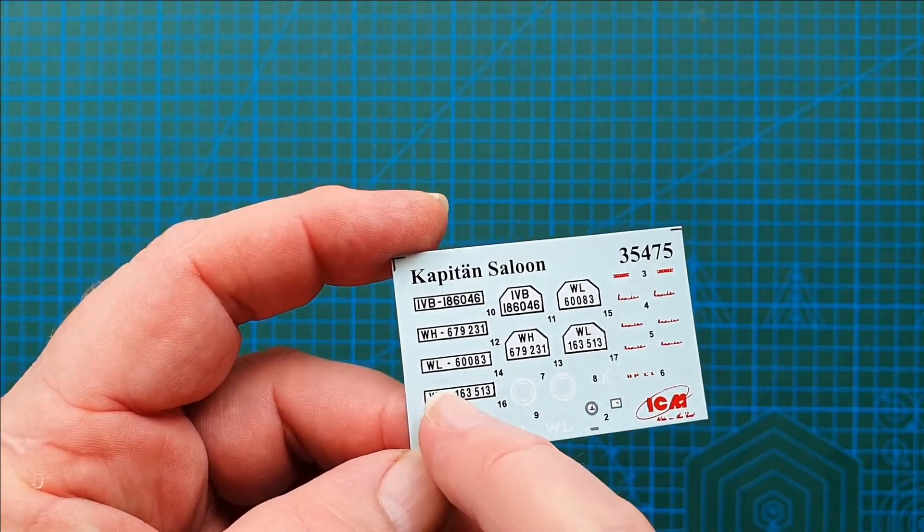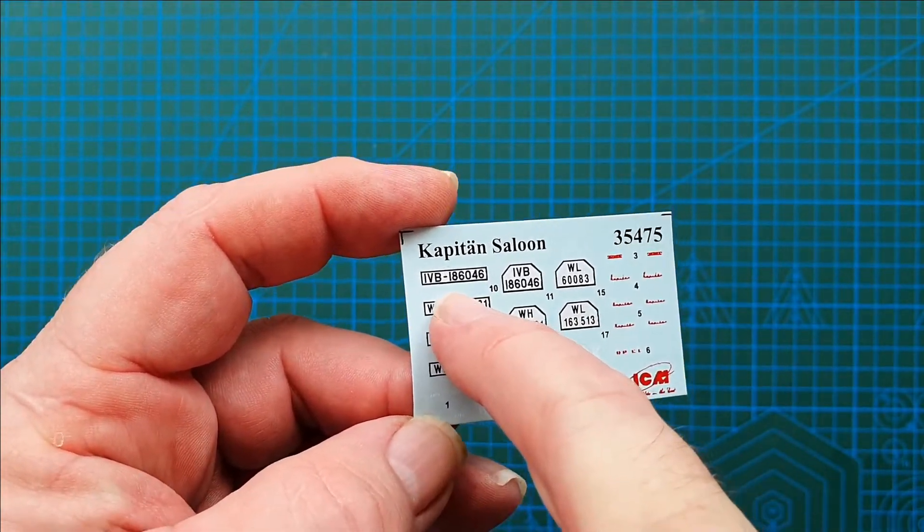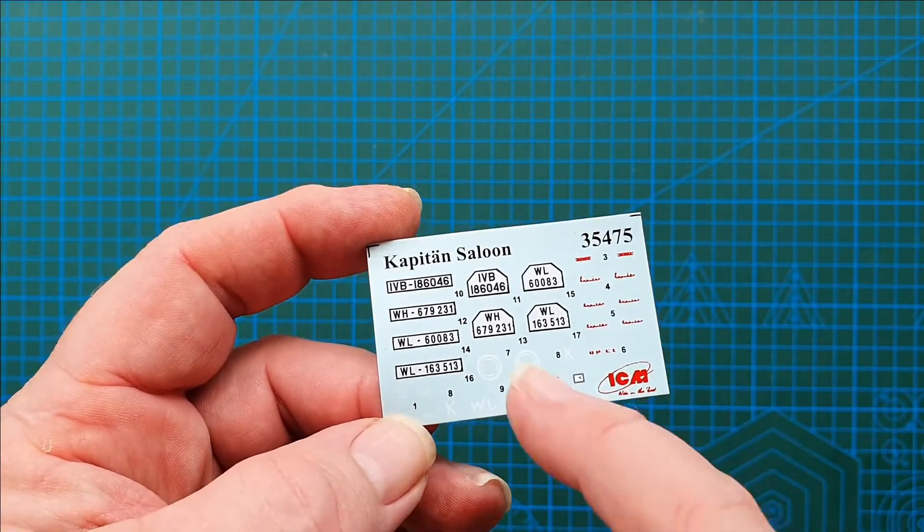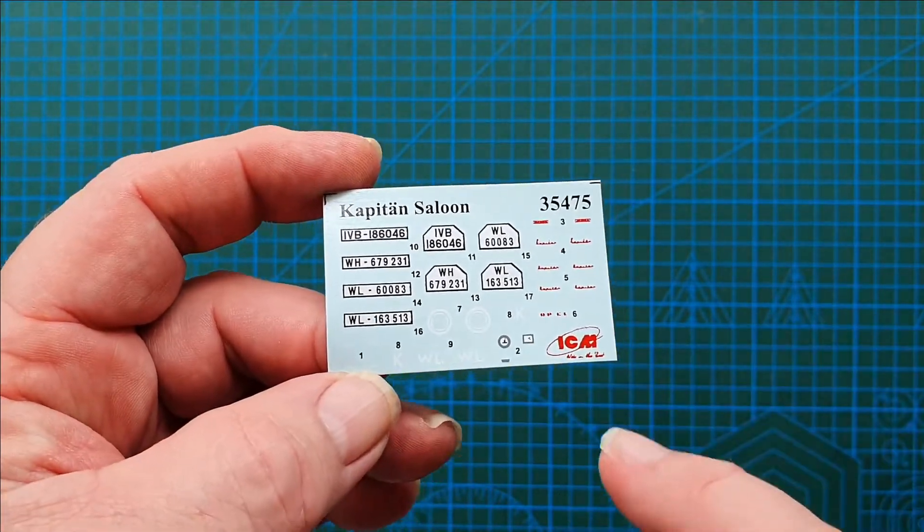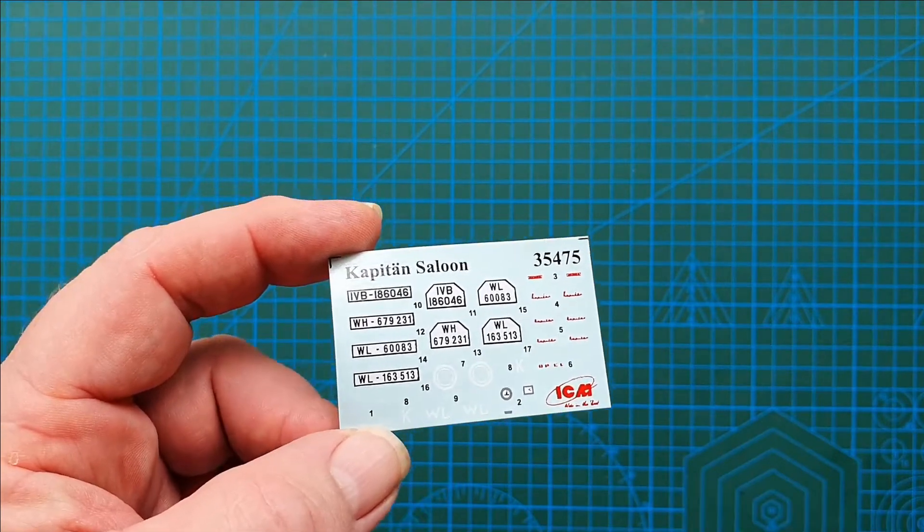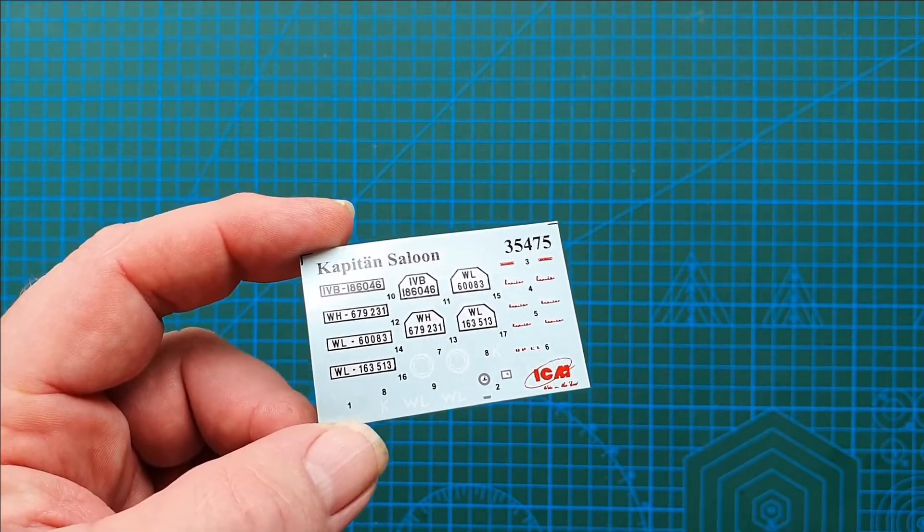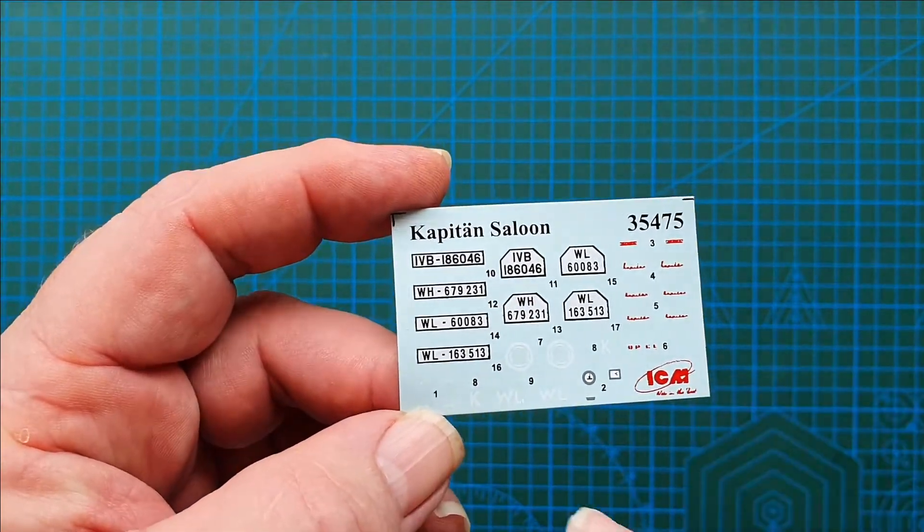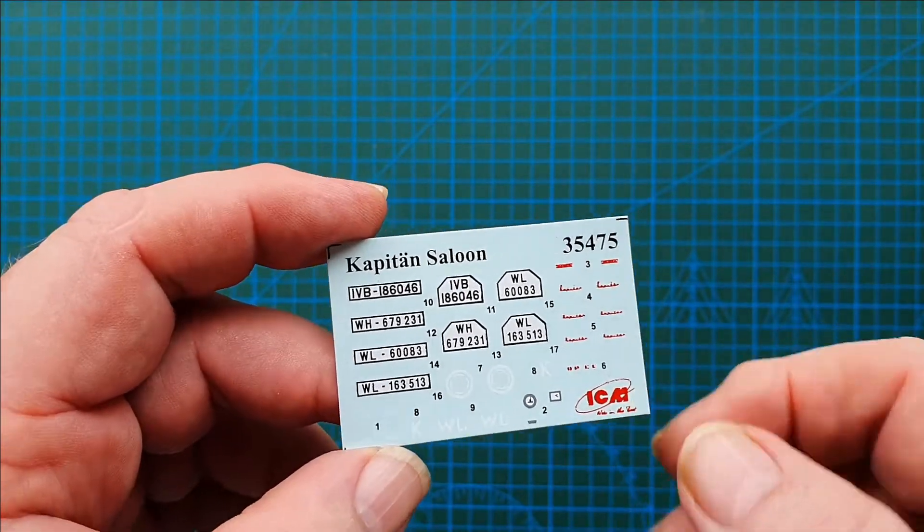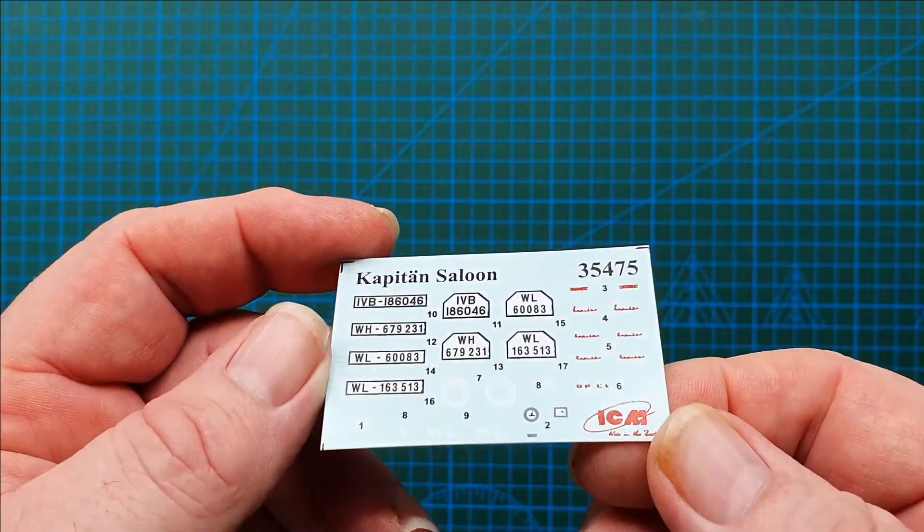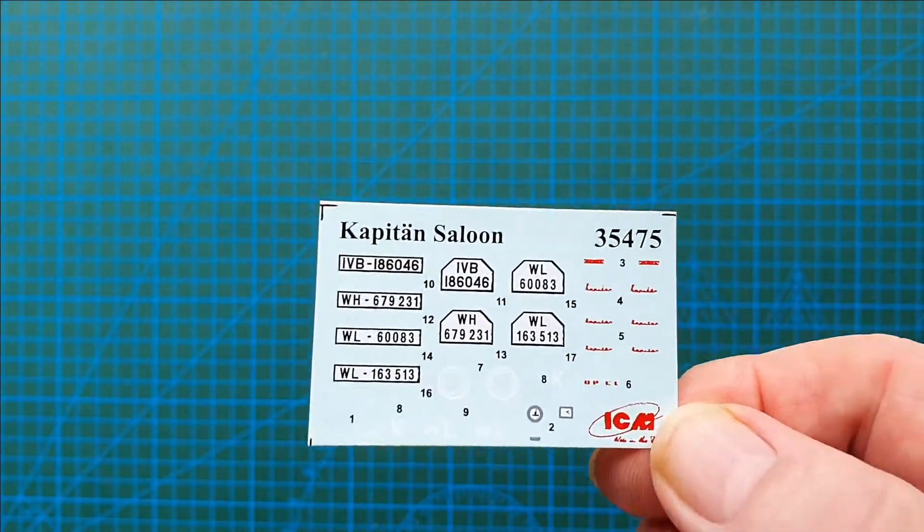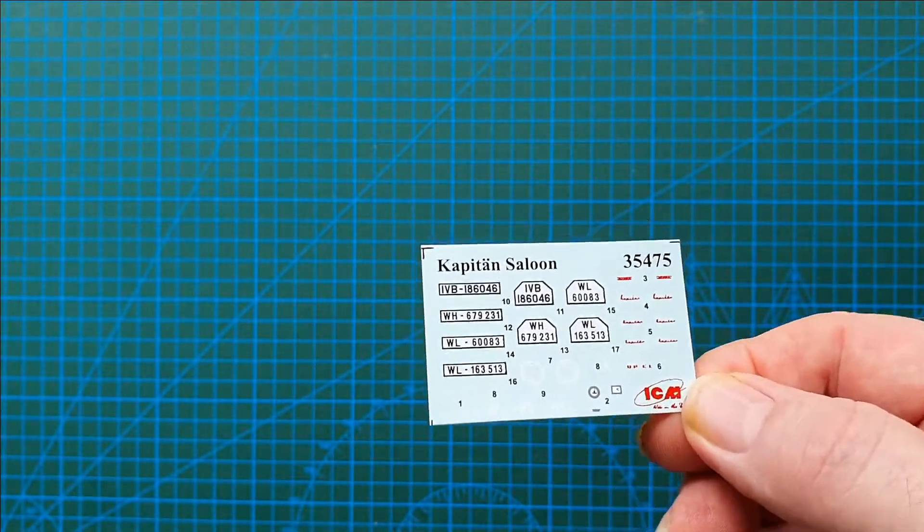You've got number plates for Luftwaffe. That appears to be a civilian vehicle. Also Wehrmacht number plates as well. Plus these markings here are your opal badges for the hubs on your wheels. A couple of other small unit badges and things on here, which is really nice. I won't say they're super duper complex, but they will give you a really nice model with some nice markings on it. That's the decals.